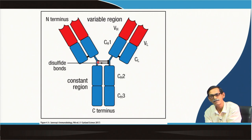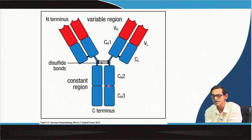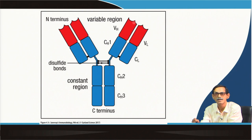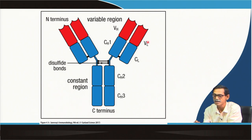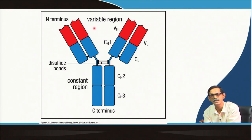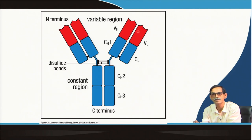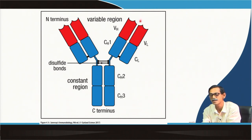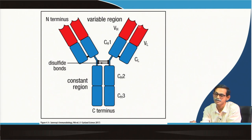Looking at the same picture with domain labels: both the light chain and heavy chain have an upper part shown in red and the rest in blue. The red region is labeled VL and VH — V for variable — because this region is responsible for antigen binding. Since there are so many varieties of antigens, we need different antibodies that can interact with different antigens, so this region must be maximally variable.